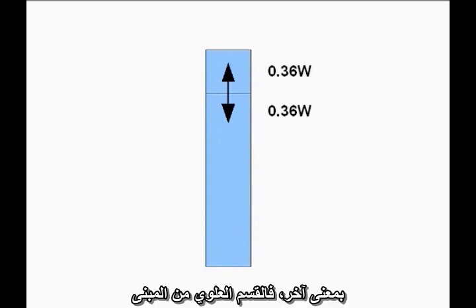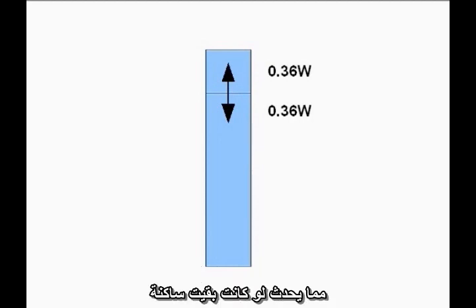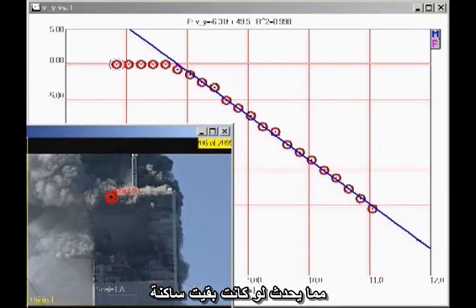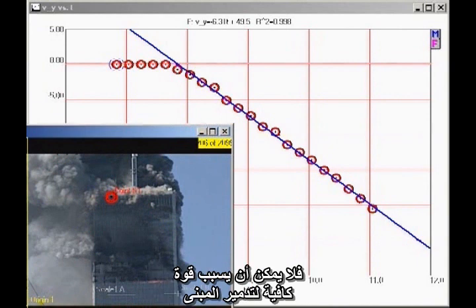In other words, the top section of the building is exerting less force on the lower, stronger, undamaged structure than it would if it were simply sitting motionless. Therefore, as long as the top section of the building is in uniform downward acceleration, it cannot possibly be providing sufficient force to destroy the building.